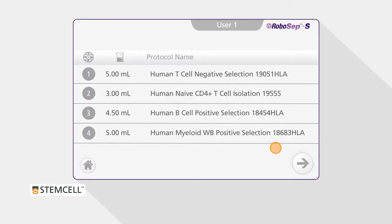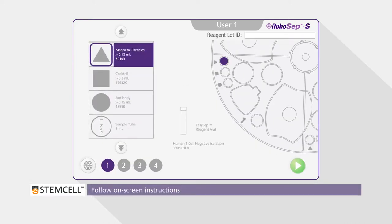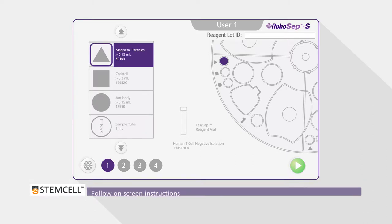After having selected the protocols for each quadrant, you are ready to load the samples and reagents into the carousel. The screen will show an image of the carousel. The on-screen instructions will help guide you through the loading process.